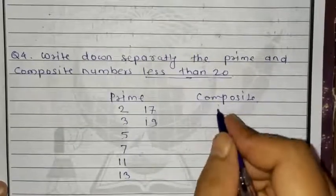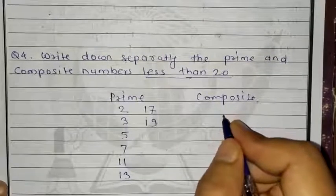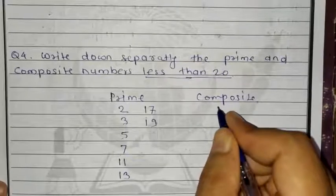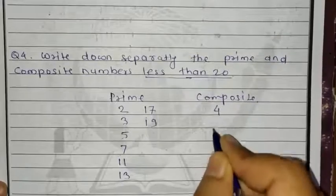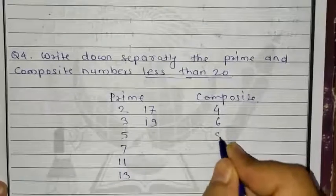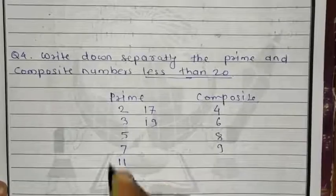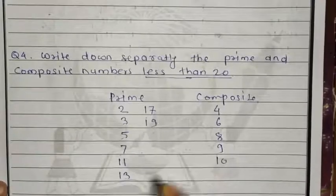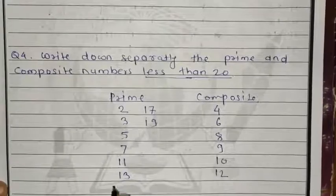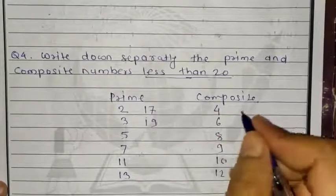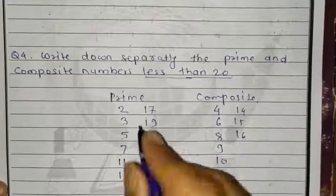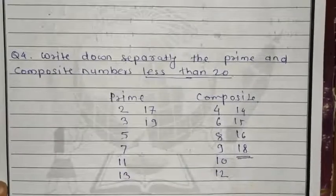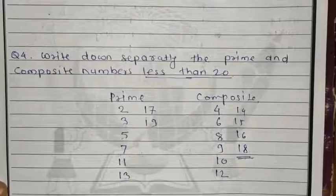The remaining numbers go into the composite list. Composite numbers less than 20 are: 4, 6, 8, 9, 10, 12, 14, 15, 16, 18. They are asking for numbers less than 20, so these are all the composite numbers.